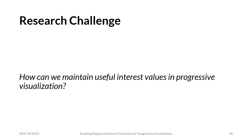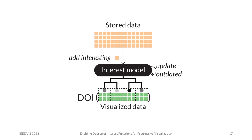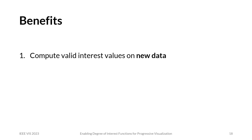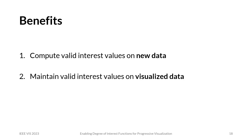This leads us to the research challenge: how can we maintain useful interest values in progressive visualization? In our short paper, we address this by proposing an approach that enables DOI functions on progressive visualizations. We do this by maintaining a model of the current user interest — in particular, a regression tree. By making use of the particular properties of regression trees, we can alleviate the drawbacks of per-chunk computations and full recomputation. Our approach benefits us along all parts of the data: we can compute valid interest values on new data, maintain valid interest values on visualized data, and steer the chunking on future data towards interesting items.